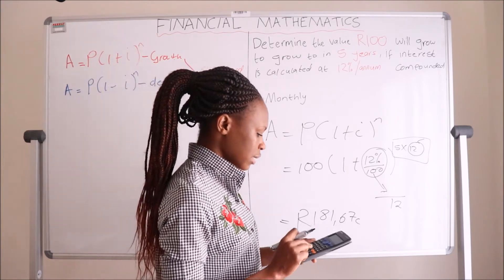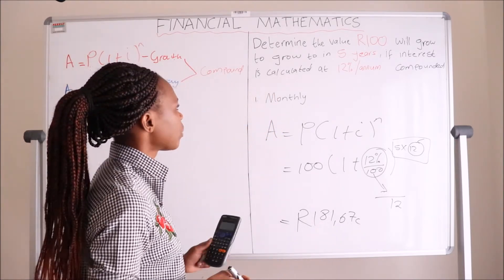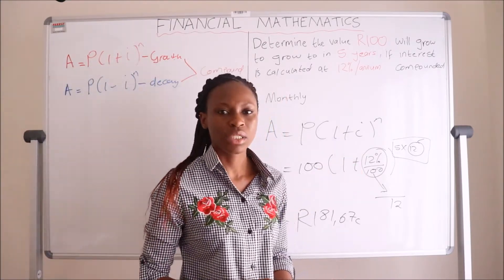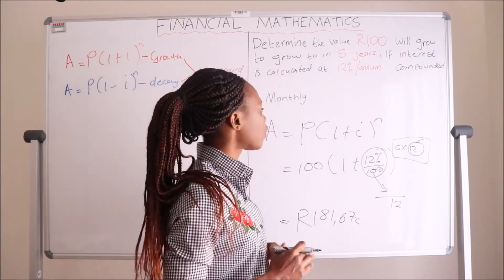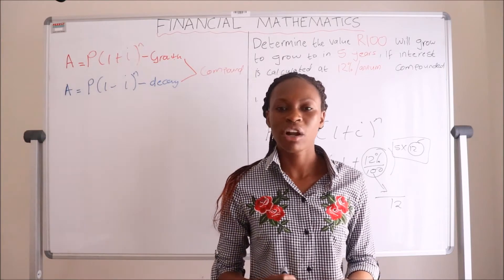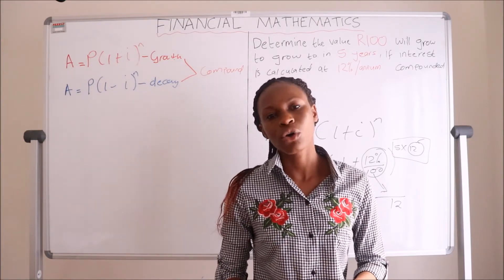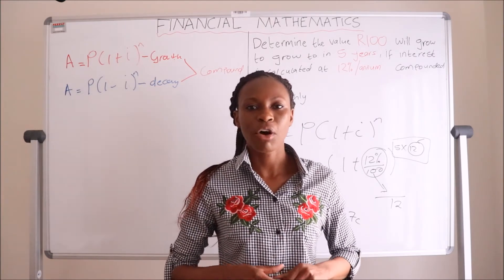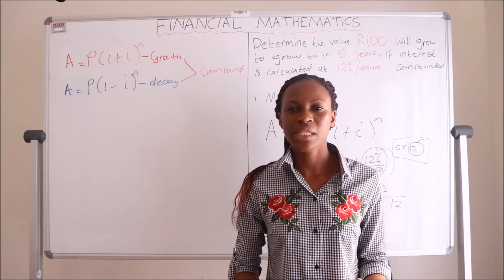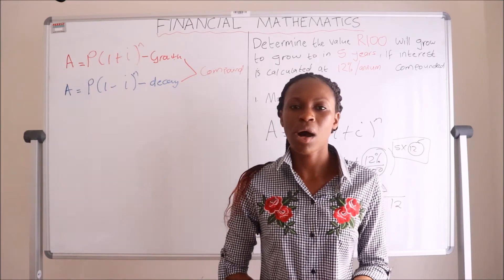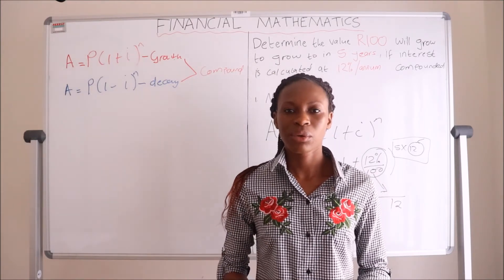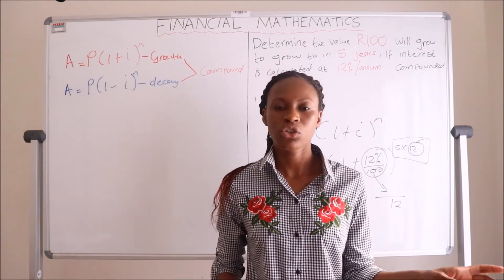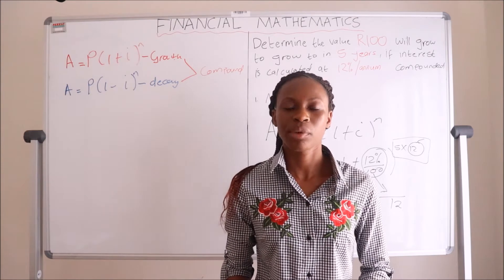If you have to compound multiple times in a year, you divide the interest rate by the number of that compounding period in a year. For example, monthly — we have 12 months in a year, so we divide by 12. We also multiply the period by the number of months in a year, which is 12. If they say compounded quarterly, we have four quarters in a year — the interest rate is divided by 4 and the time period is multiplied by 4.